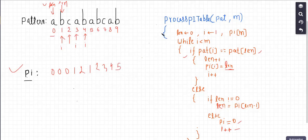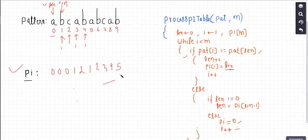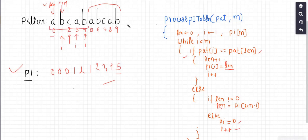Now this is how we prepare the LPS table. We want to understand how this can help us to solve this problem. You can notice that the value 5 here gives me the prefix and the suffix which is also a prefix — 'abcab' — this is also a border. So I put 5 here.